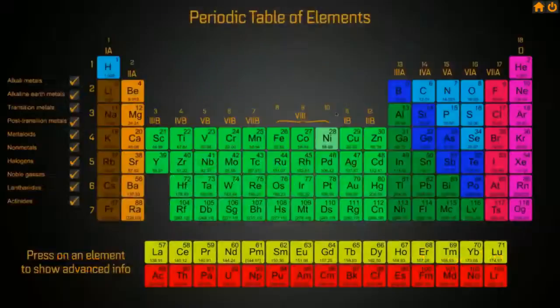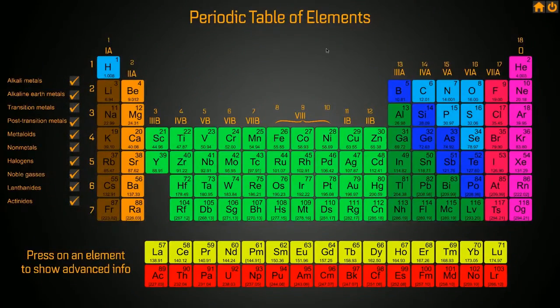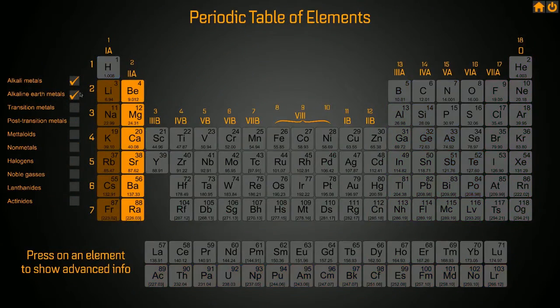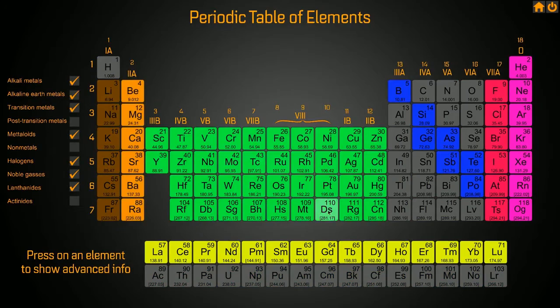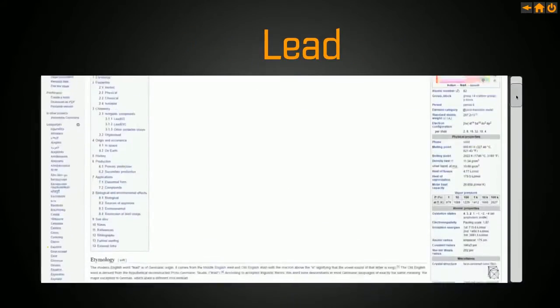Then there's a built-in periodic table with customizable filters for each group of elements. Clicking on one of the elements will lead you to the desired Wikipedia page for extra information.